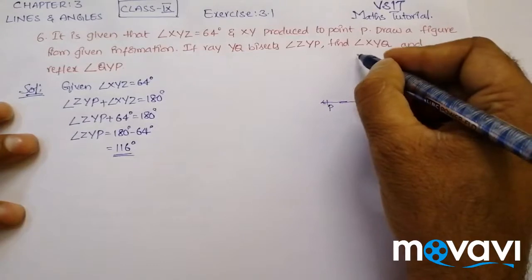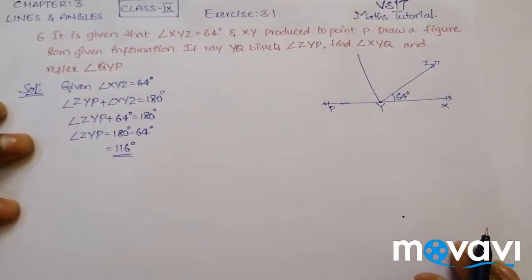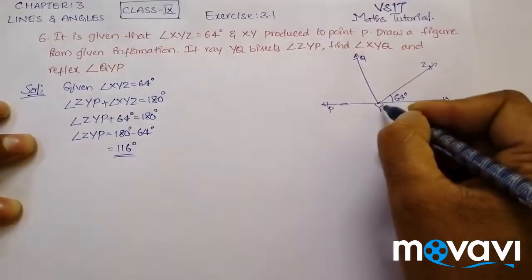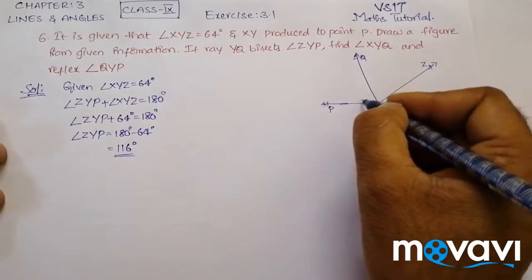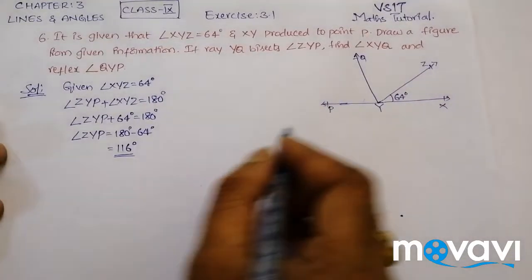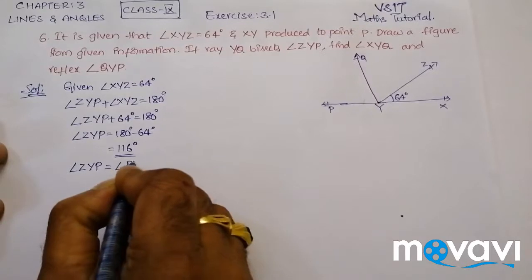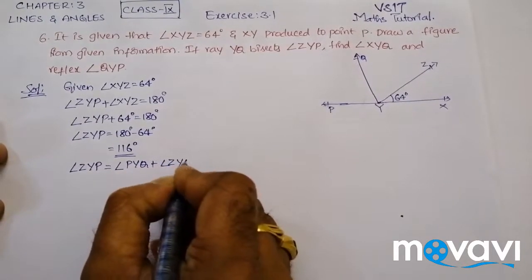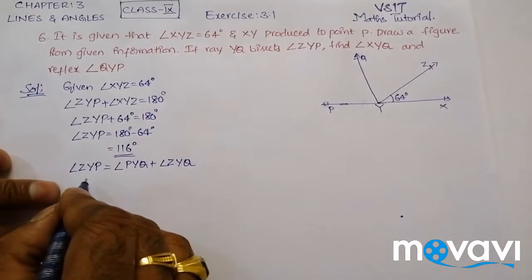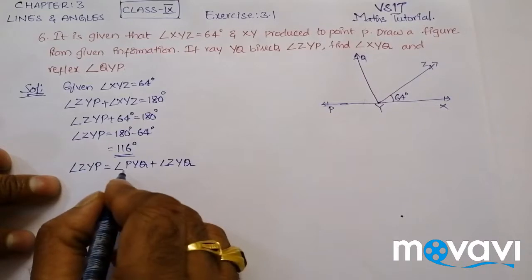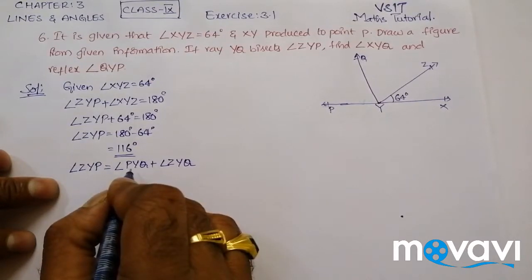Let us first draw Ray YQ. This Ray YQ bisects Angle ZYP into two equal angles. We know Angle ZYP is 116 degrees. So we can write: Angle ZYP is equal to Angle PYQ plus Angle ZYQ, where these two angles are equal. So, Angle ZYP equals 2 times Angle PYQ, or equivalently QYP.